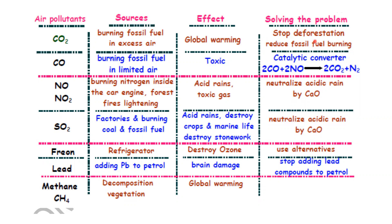If we cut the trees, deforestation will continuously increase the amount of carbon dioxide in the atmosphere. We should stop deforestation and use more renewable or greener fuels, such as solar energy or wind energy, instead of fuels that emit carbon dioxide. Carbon monoxide is produced by incomplete combustion or a limited supply of air, and it is a toxic and harmful gas.